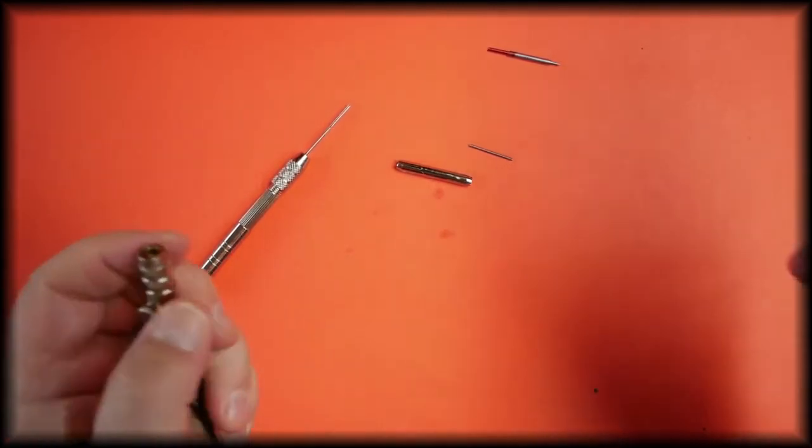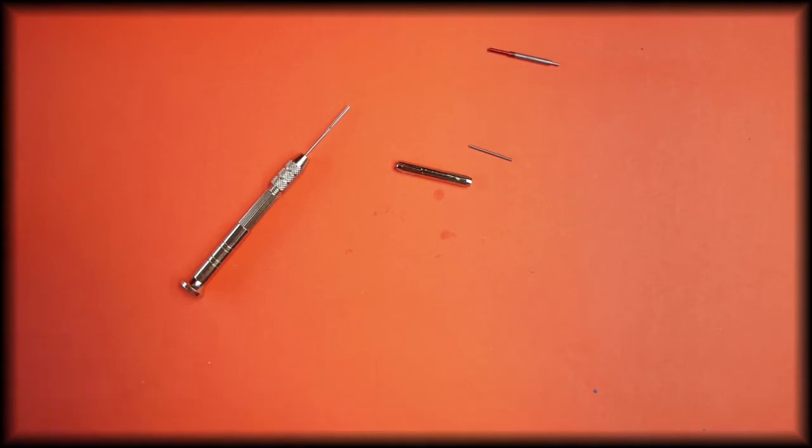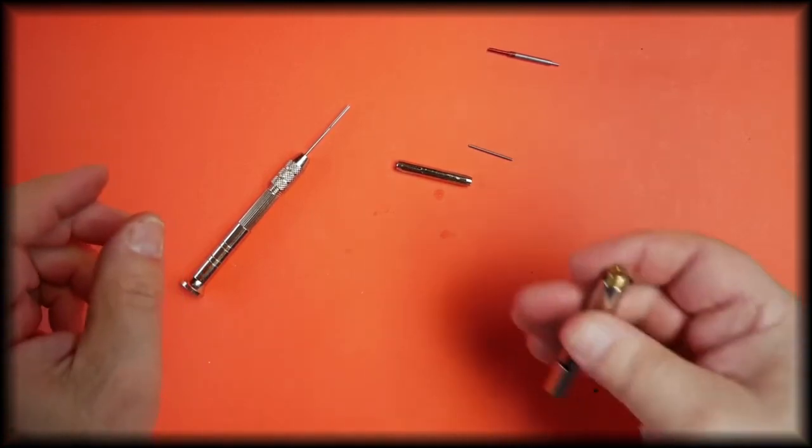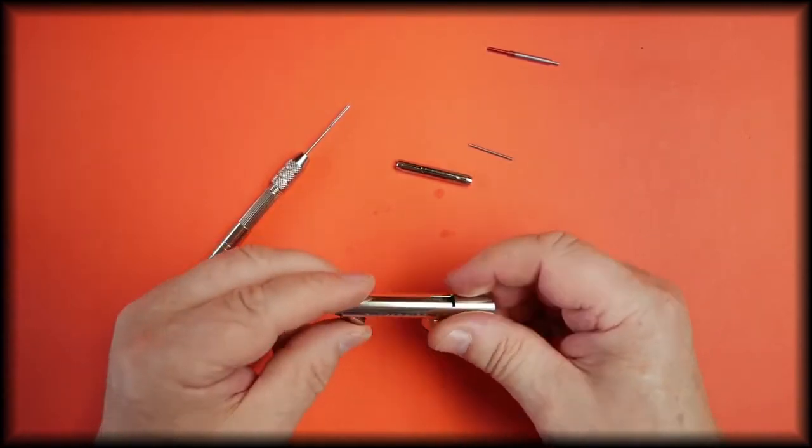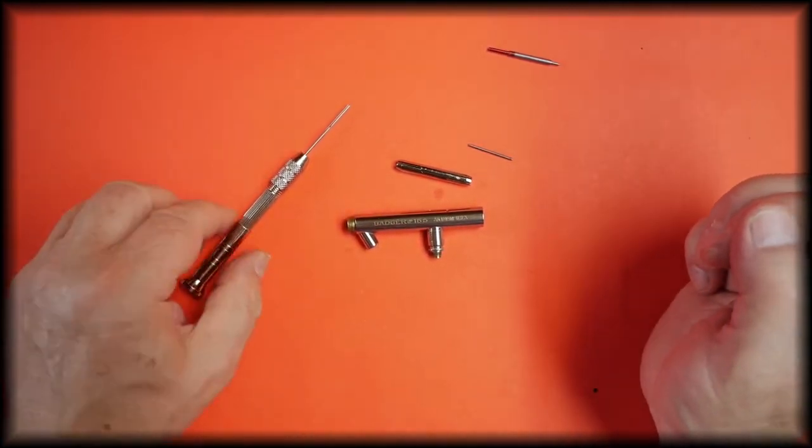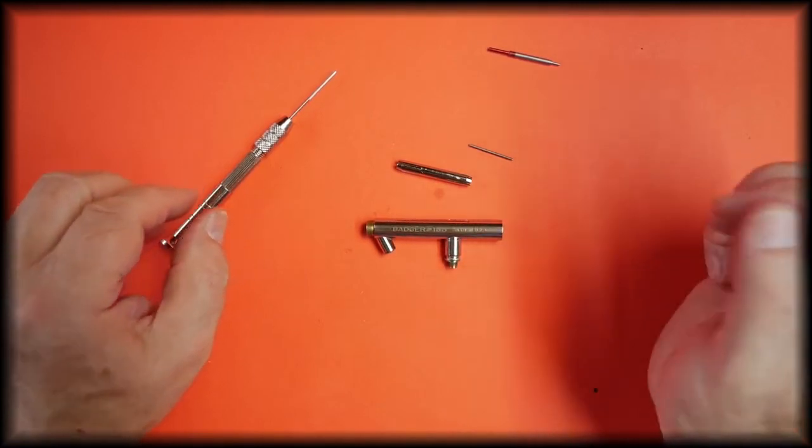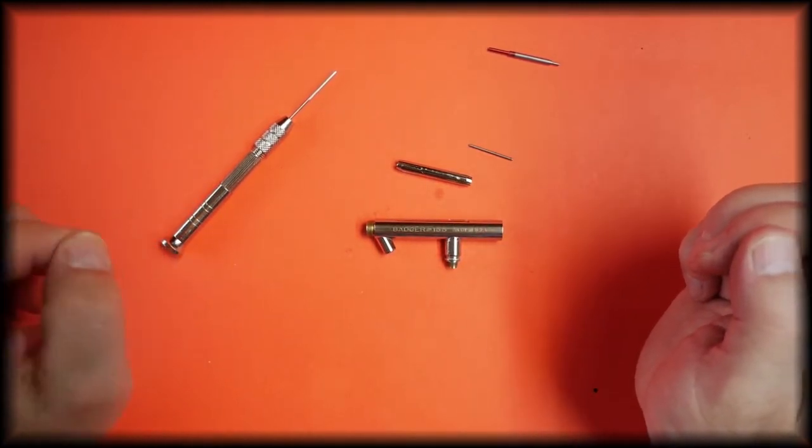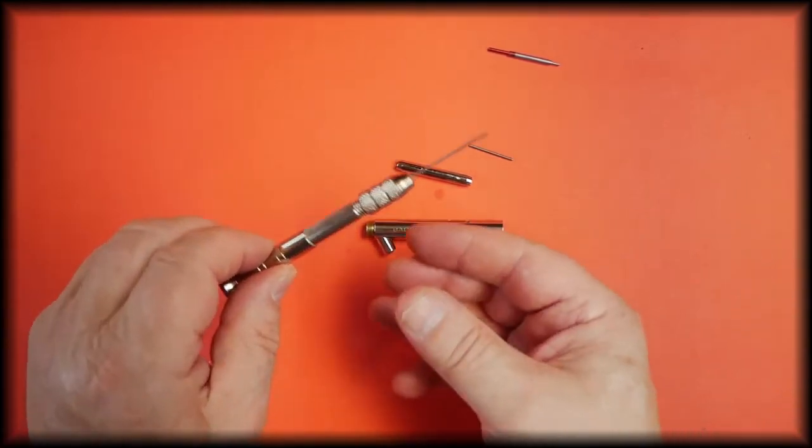Just to make sure there's no little bits left in there—we don't want to clog up the tip. And that is fitting the needle bearing into the airbrush with the Badger replacement tool kit.